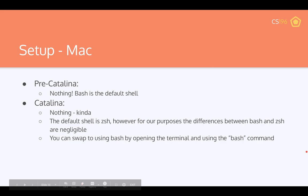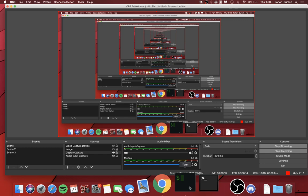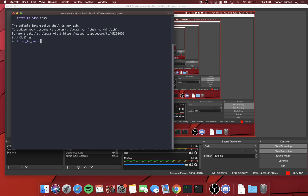If you're on Mac pre-Catalina, Bash is the default shell and you have no issues. If you're on Catalina, the default shell is zsh. However, for our purposes the difference between Bash and zsh is pretty much negligible. You can swap to Bash by simply opening your terminal and typing 'bash', but we're going to use zsh because it looks nicer and it really doesn't matter for our purposes.